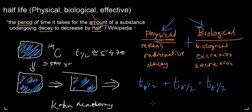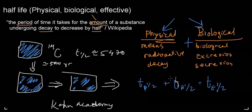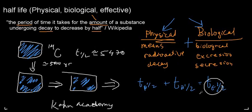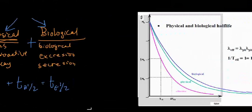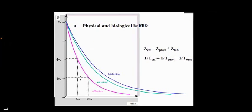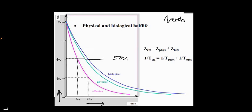Think of it this way: if a substance can decay physically in five seconds but can be expelled biologically even faster, then the half-life accounting for both processes will be shorter than either one alone. To make this clearer, let's use the graph. On the x-axis is time, and on the y-axis is the amount of material remaining. The graph starts at 100% and decreases. When the curve hits 50%, that point in time is the half-life.